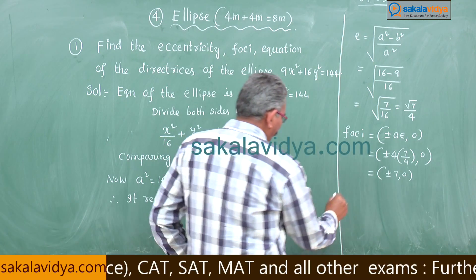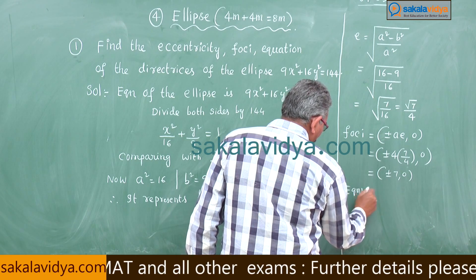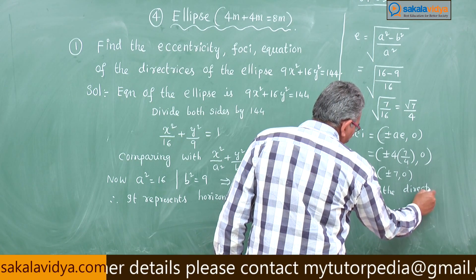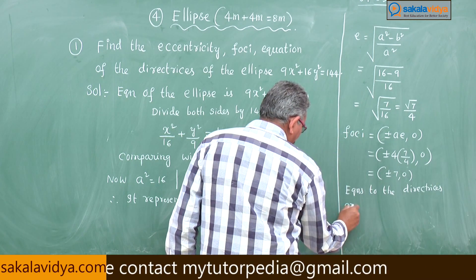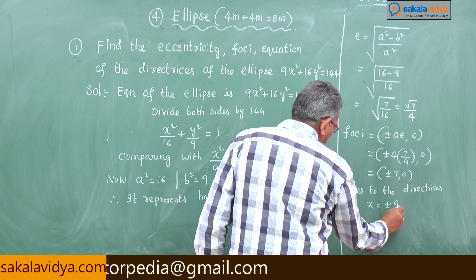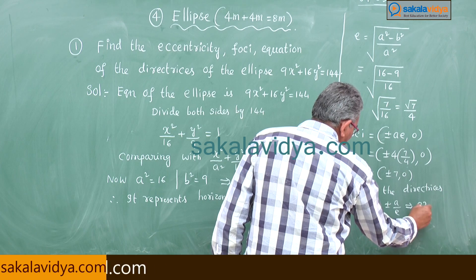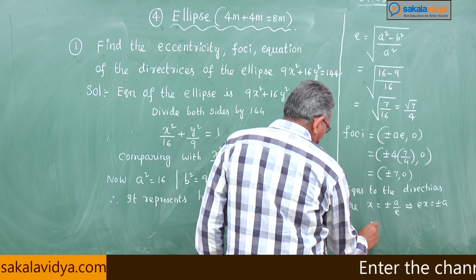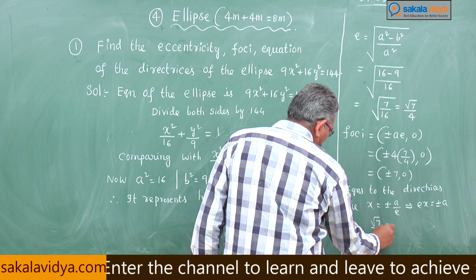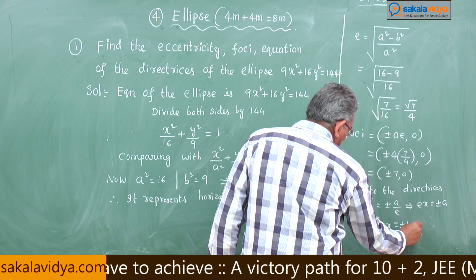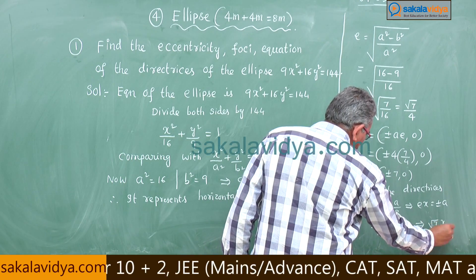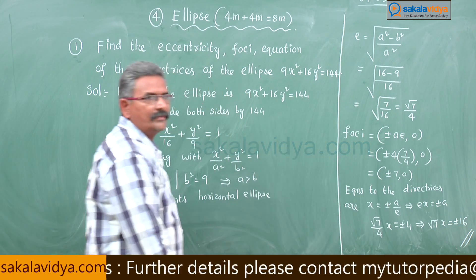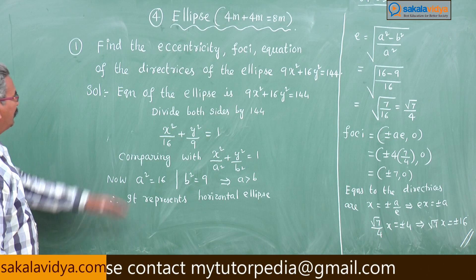The equations of the directrices are x = ±a/e. Since e = √7/4, we have x = ±4 / (√7/4) = ±16/√7. Cross-multiplying, √7·x = ±16. This is the final answer. I hope you followed — it is very simple.